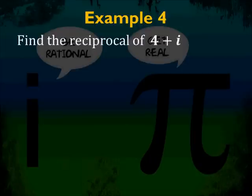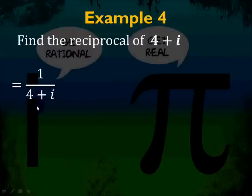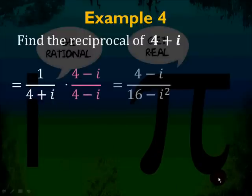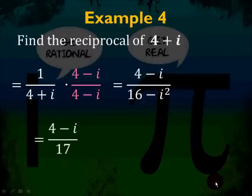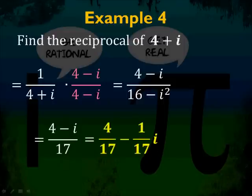Last question: find the reciprocal of 4 plus i. The reciprocal of 4 plus i is 1 over 4 plus i. Multiply top and bottom by the conjugate 4 minus i. You get 4 minus i over 16 minus i squared, which is 4 minus i over 17. Separate into two parts, and your answer is 4 seventeenths minus 1 seventeenth i.